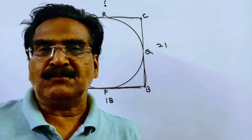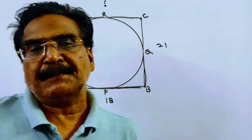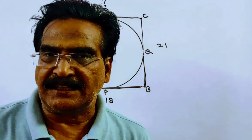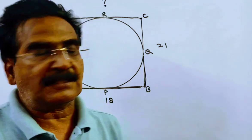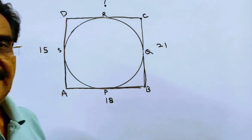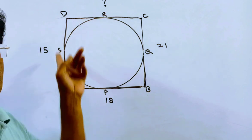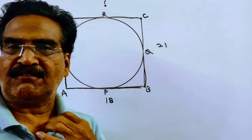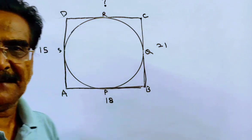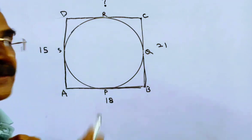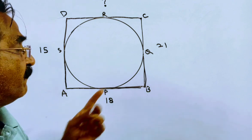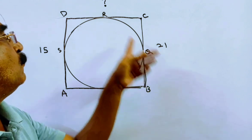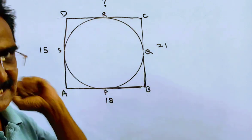Hi friends, good morning. Please look at the next problem in geometry. Friends, the problem is given in the description box. A circle touches all the four sides of a quadrilateral A, B, C, D. The points of contact are P, Q, R, and S.